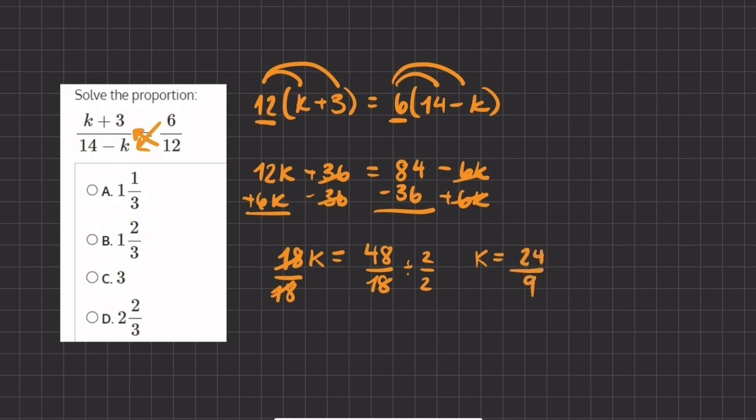Our answer is written in a mixed number form, so let's turn this improper fraction into a mixed number. We're going to ask ourselves, how many times does 9 go into 24? That is 2 times. How many do we have left over? If 9 goes into 24 two times, we have 18. The difference between 24 and 18 will give us 6, and we will keep our denominator of 9.